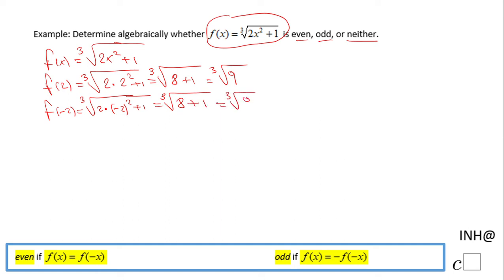So we notice that f(2) = f(-2), so it looks like this function will be even based on this numerical approach. However, let's see the algebraic approach, which means I need to evaluate f(-x).